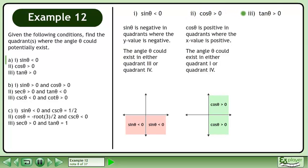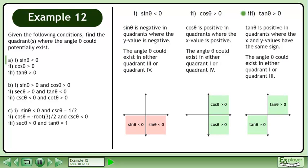Now we'll move on to part 3. Tanθ is positive in quadrants where the x and y values have the same sign. The angle θ could exist in either quadrant 1 or quadrant 3.